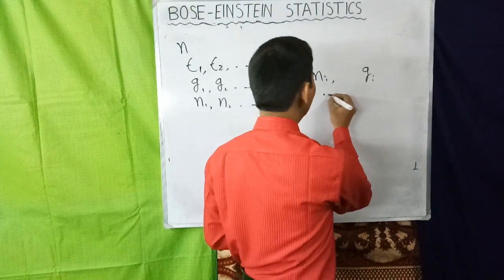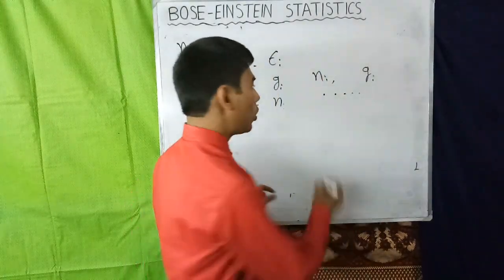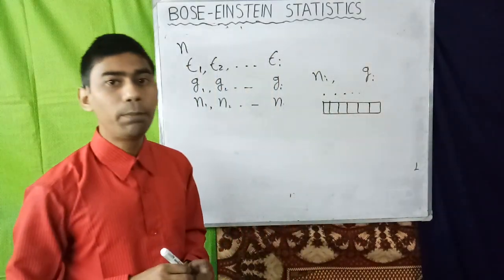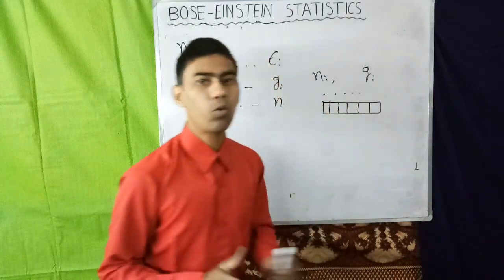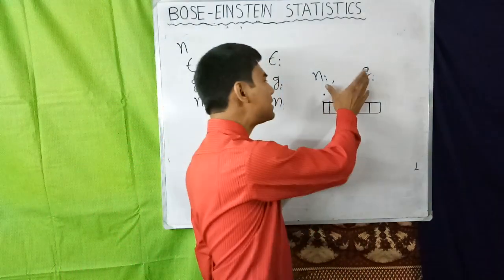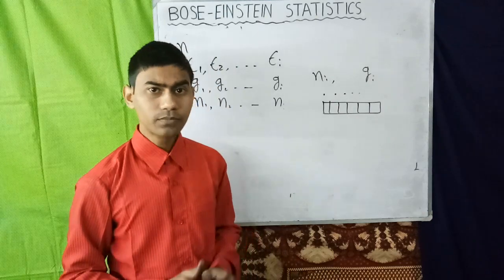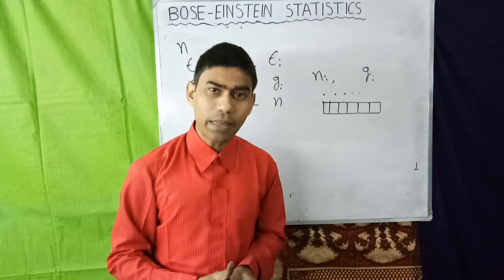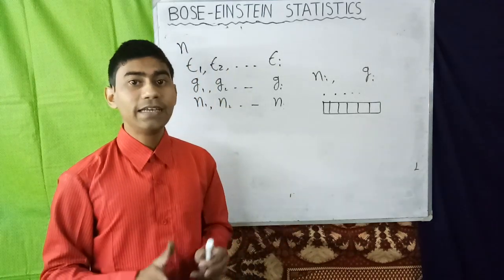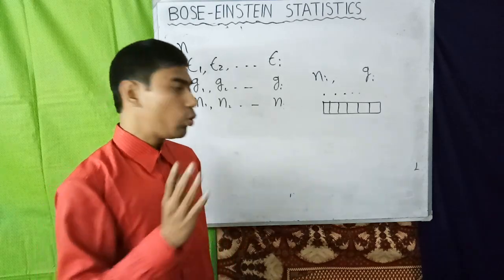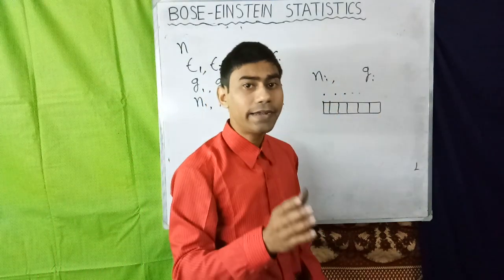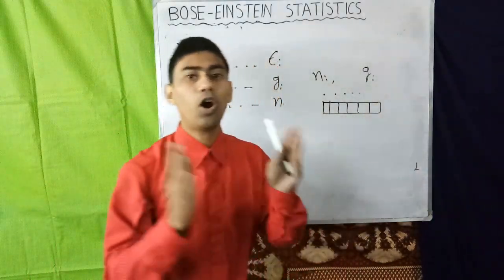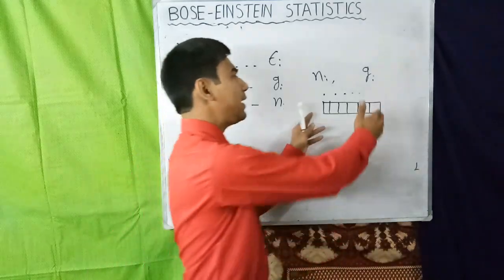To solve this, let us draw some dots and some boxes. Suppose dots represent particles and boxes represent quantum states. We have to put the particles inside the boxes. Now particles and boxes can be arranged in an arbitrary manner, but the only restriction is we have to start with the first box and end with box number Gᵢ on the right. No particle can be outside the box; all particles should be anywhere inside the box.